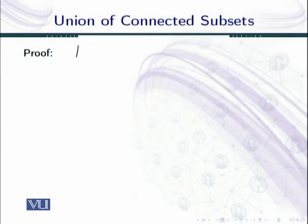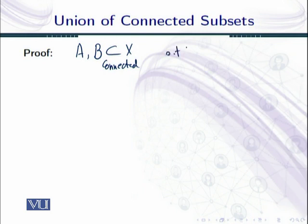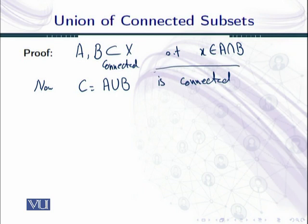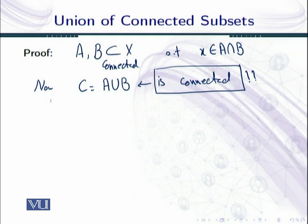We start our proof with two connected subsets of the set X, given that there is a point that is in A and B at the same time — x belongs to A and B. We have to show that C, which is equal to A union B, is connected.